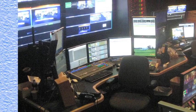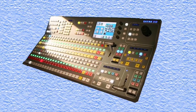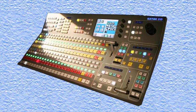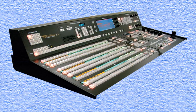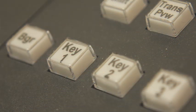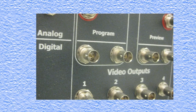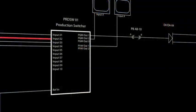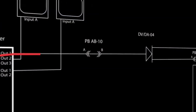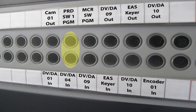Production switchers are differentiated from all other types by the number of MEs, or Mix/Effects buses they have. Some production switchers can have many, many inputs, especially those used for live events. In our tutorial example, we are using a simple production switcher, and the video from the camera is just passing through it to the program output. This is the second patch point in our tutorial: from production switcher 1 program out to digital video DA number 4 in.